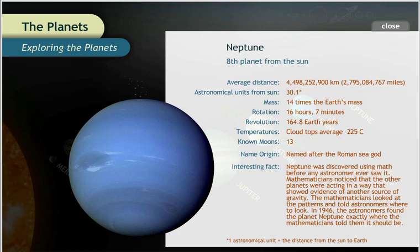Neptune is the eighth planet from the Sun and is the last of the outer planets. Its mass is similar to Uranus's and is about 14 times greater than the mass of Earth.